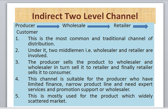Next is the indirect two level channel. As the name suggests, one more level is added — the wholesaler. This is the most common traditional channel of distribution. Under it, two middlemen — wholesaler and retailer — are involved. The producer sells the product to the wholesaler, the wholesaler sells it to the retailer, and the retailer sells it to the customer. This channel is suitable for producers who have limited finance, a narrow product line, and need expert services from wholesalers. It is mostly used for products with a widely scattered market, such as fast moving consumer goods like shampoo.